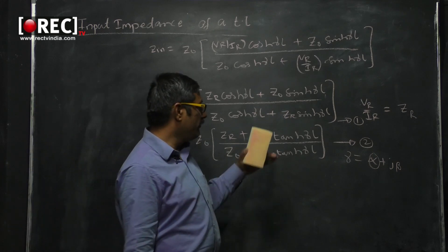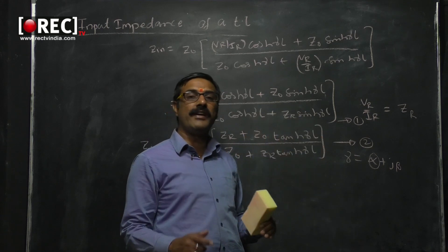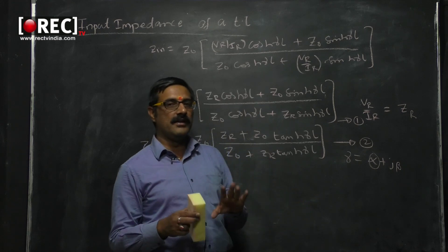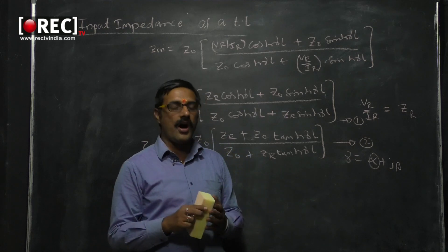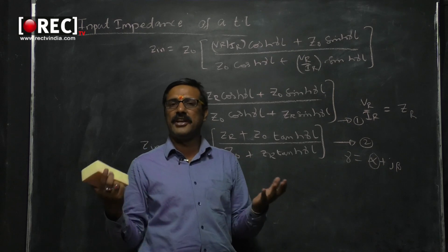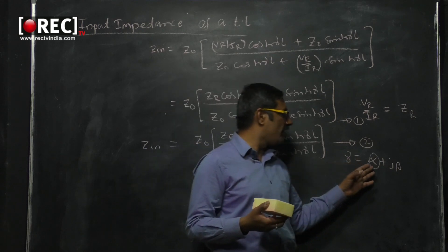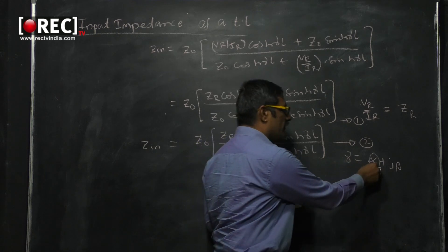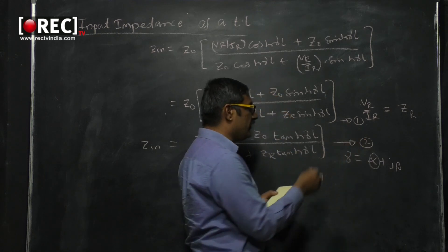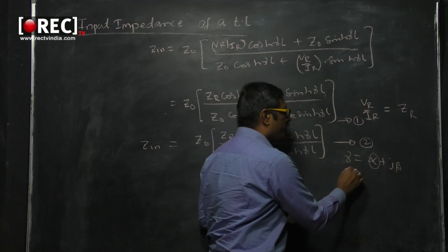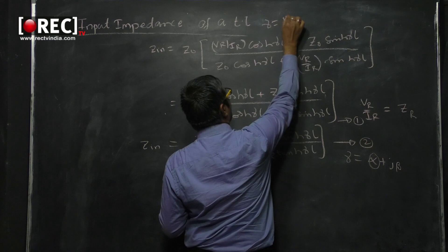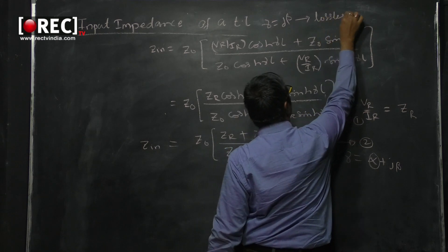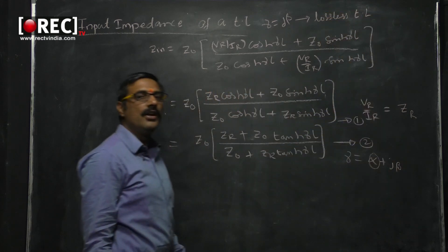Now let us derive the input impedance for a lossless transmission line. When the line is lossless, there is no attenuation, meaning the attenuation constant α equals zero. Since α equals zero, γ reduces to jβ. This is the condition for a lossless transmission line.